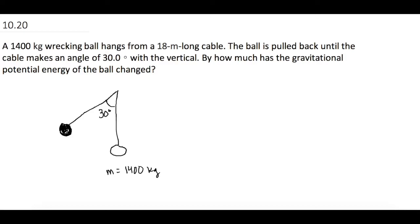By how much has the gravitational potential energy of the ball changed? So gravitational potential energy, remember, is U and that is equal to mg delta y. So we have the mass and we have gravity so we need to find the change in y.